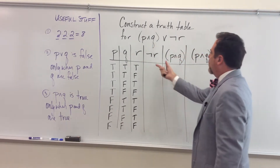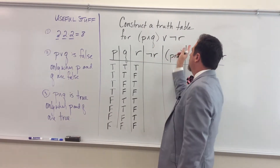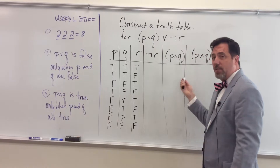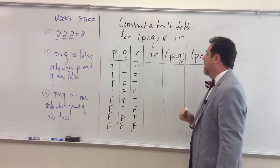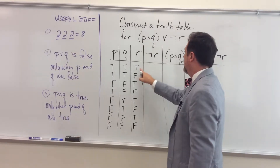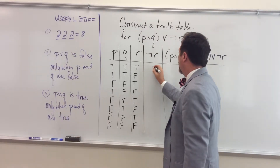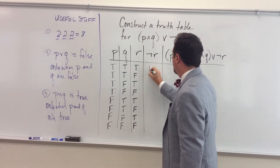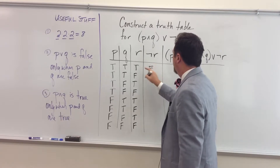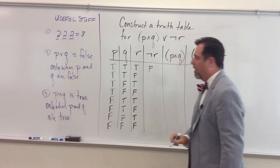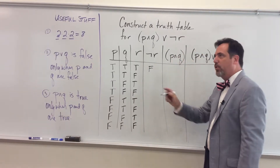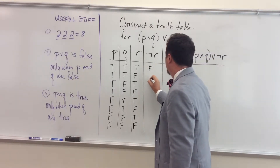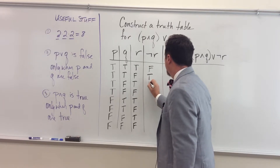So our first component of this expression is not R. That's pretty easy because I already have the R column. All I have to do is negate all of the truth values in the R column — true becomes false, false becomes true. It's pretty easy to do.